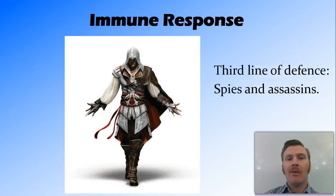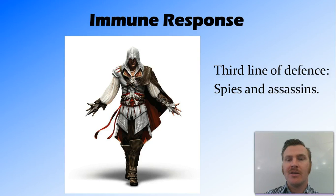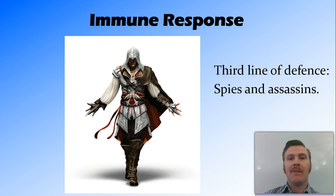The third and final line of defense is the immune response, or specific response. In the castle analogy, this is like the spies and assassins — they can work out who is attacking, who's in charge, and go and target particular pathogens specifically.